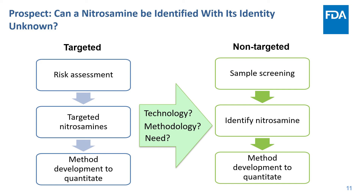By a non-targeted approach, we do not need to have prior knowledge of the nitrosamine, and we may be able to simply screen a sample to look for any nitrosamines, find them, determine their identities, and use that information for risk assessment. Moving to this approach may still require additional enabling techniques and the development of new methodologies.